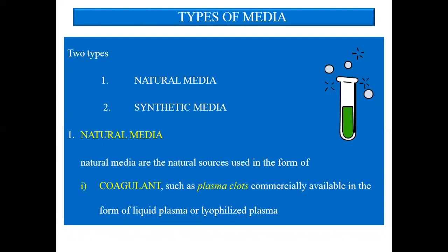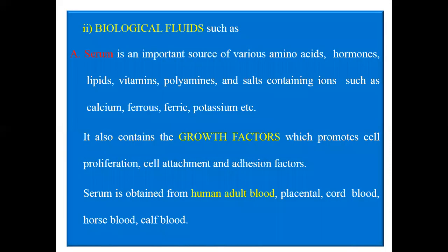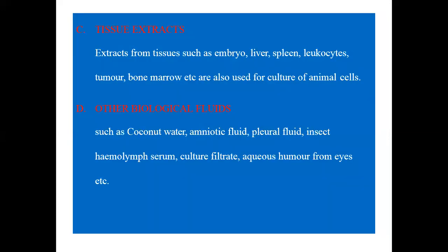Natural media are natural sources used in the form of coagulants such as plasma clot. Serum is an important source of various amino acids, hormones, lipids, vitamins, polyamines, and salts containing ions such as calcium, ferrous, ferric, and potassium. It also contains growth factors which promote cell proliferation, cell attachment, and adhesion. Serum is obtained from human adult blood, placental cord blood, horse blood, calf blood, etc. Tissue extracts such as embryo extract, liver extract, spleen, leukocyte, tumor, and bone marrow are used to obtain culture tissue extract. Other biological fluids such as coconut water, amniotic fluid, pleural fluid, and insect hemolymph are also used as natural medium.